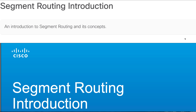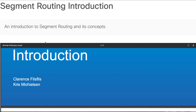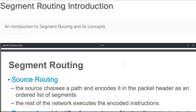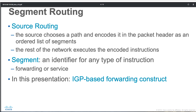As we progress we'll dissect these concepts further. Segment routing is all about source routing — a source chooses a path and encodes it in the packet header as an ordered list of segments. Something important to pay attention to is the 'ordered list of segments.' We need to understand what a segment is: a segment is an identifier for any type of instruction, telling what you want to do with that particular segment, such as forwarding or a service.